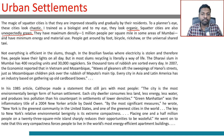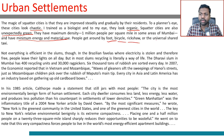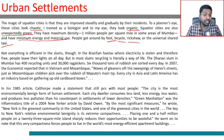They have maximum density — 1 million people per square mile in some areas of Mumbai — and have minimum energy and material use. That is how green they are. People get around by foot, bicycle, rickshaw, or the universal shared taxi. These are all less energy-consuming methods of transport.